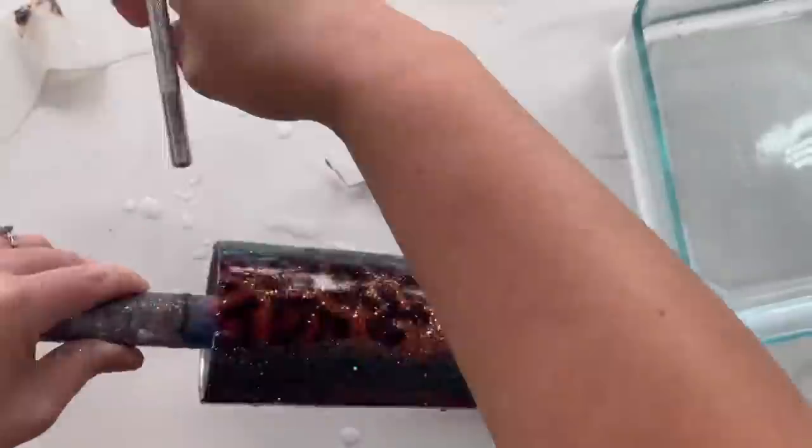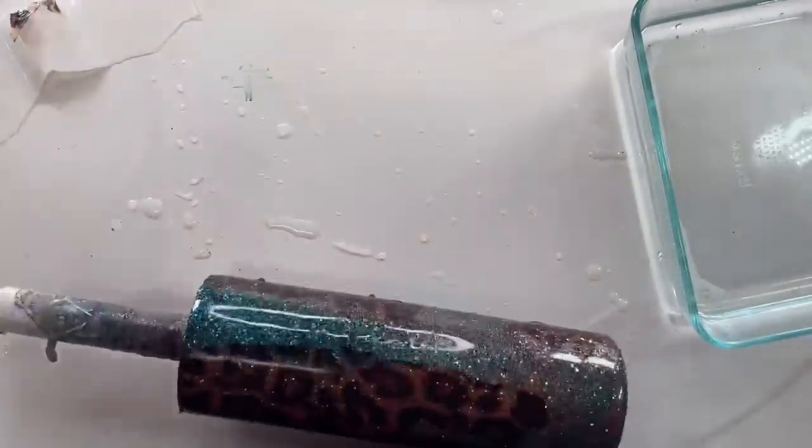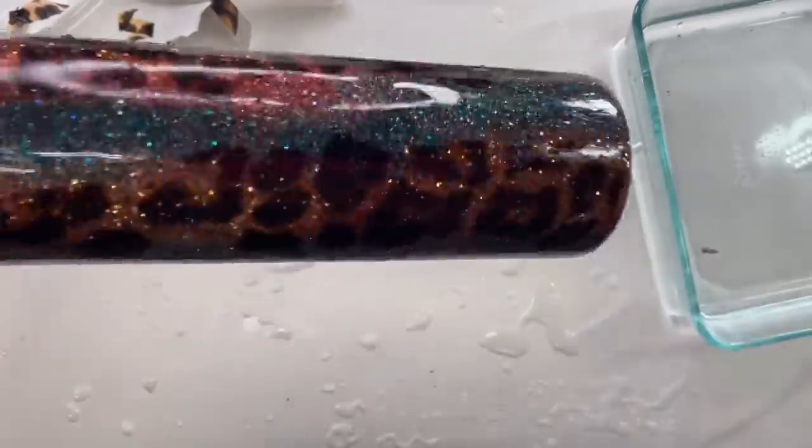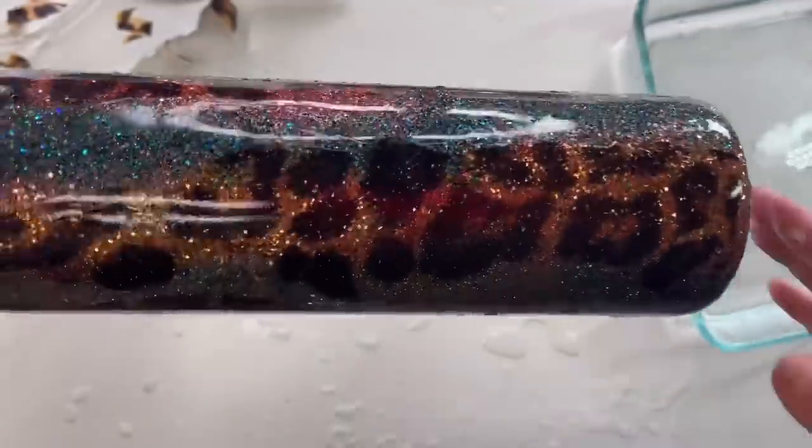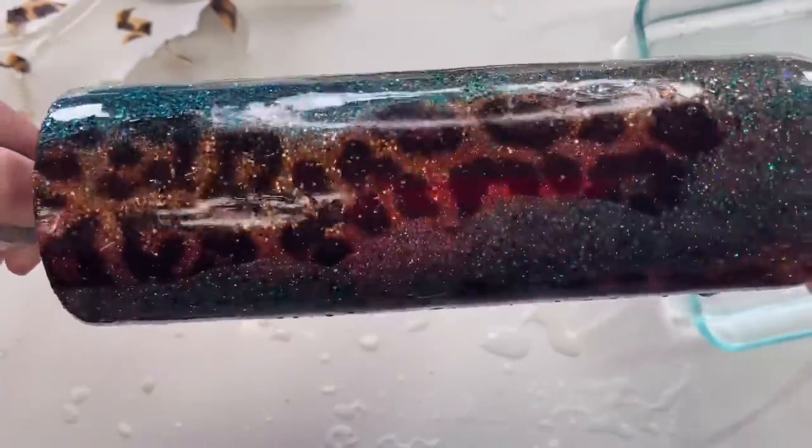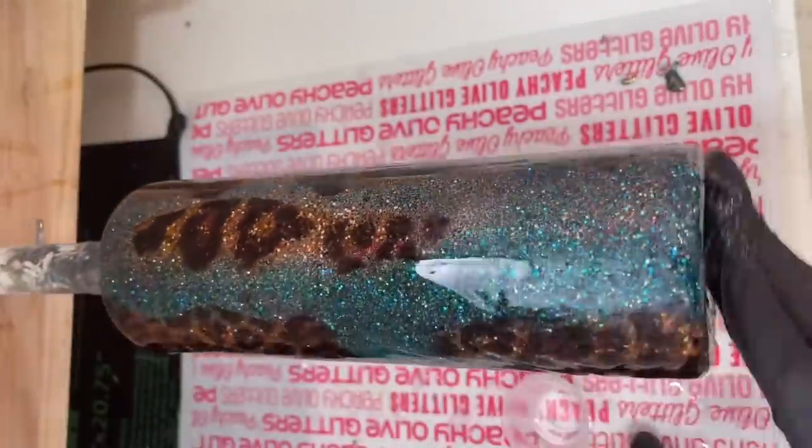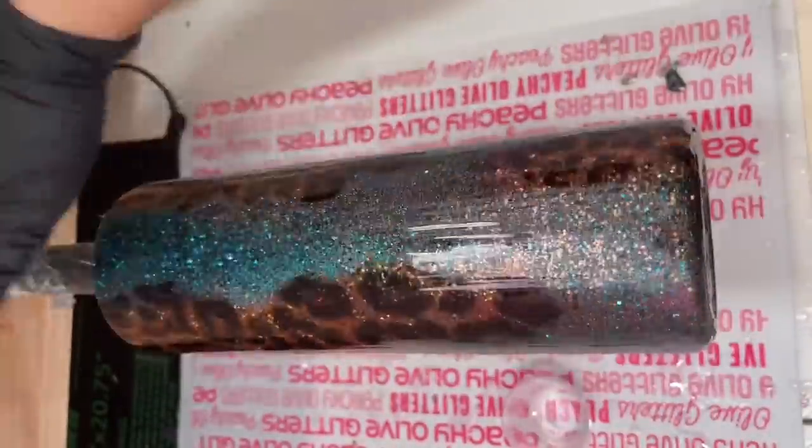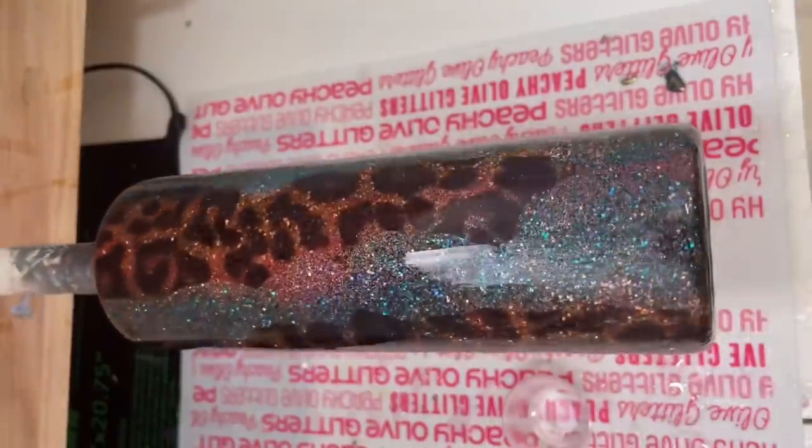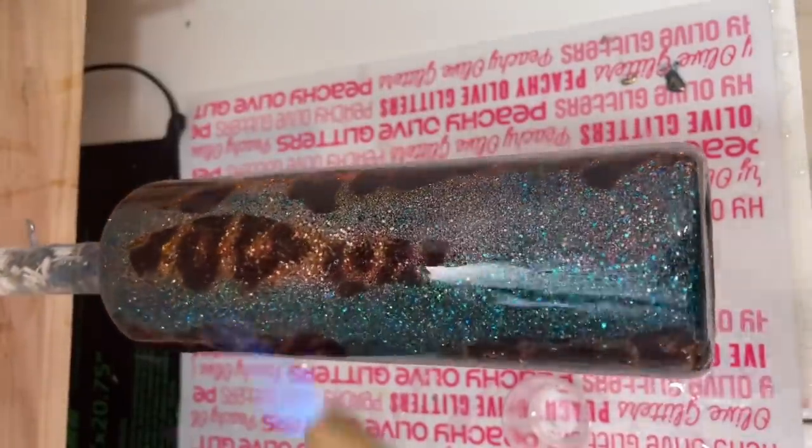So once our water slide's dry, I'm ready to apply another coat of epoxy. And this coat's going to be really thin. Mainly, I just need to seal in that water slide and protect it before we move on to our geode paint. So I've got about 20 milliliters for this coat here. I'm just using regular Alumilite's Amazing Clear Cast. This is going to take about 8 to 12 hours to dry before we're ready to move on to our next step.